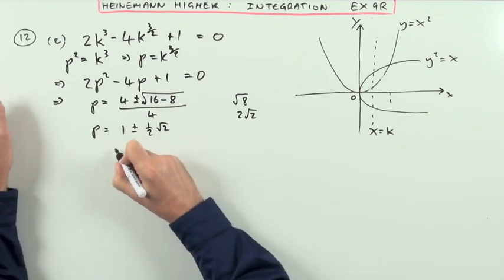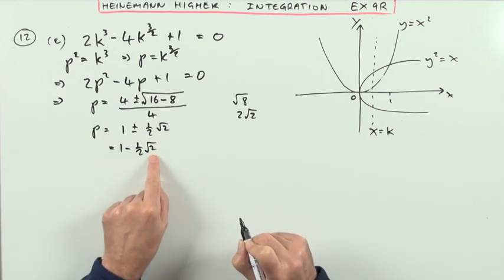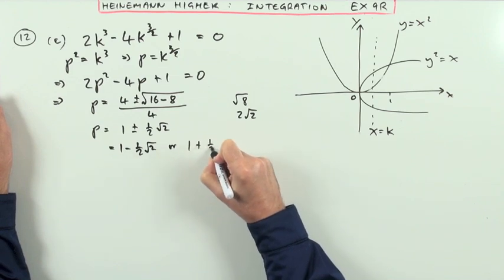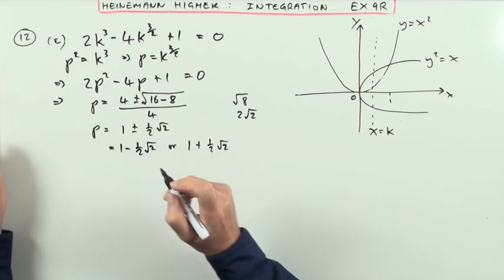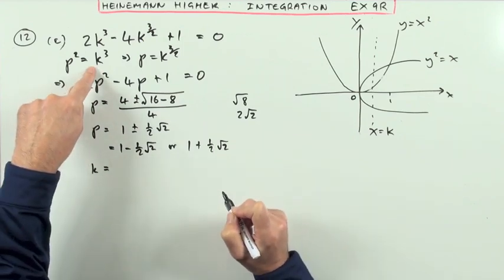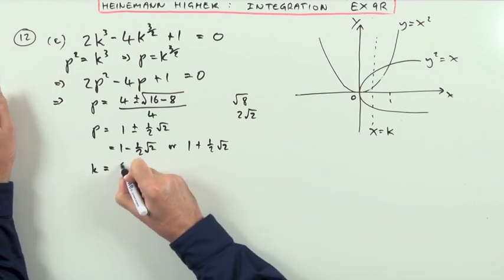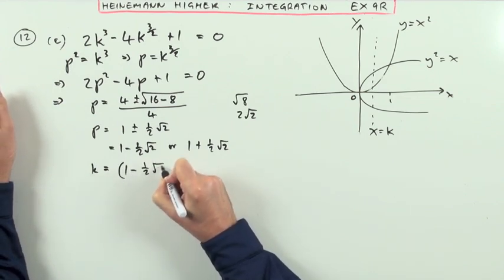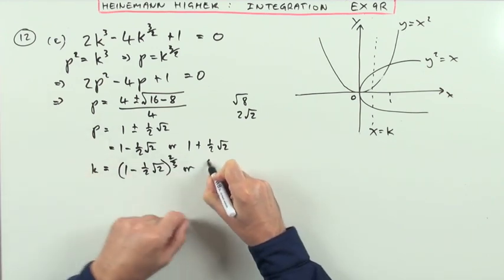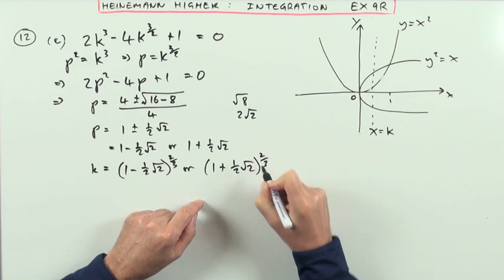So the two values of p are either 1 minus a half root 2, and root 2 is about 1.4, so that is a positive value, or 1 plus a half root 2, which means to get k, unfortunately, I'm going to have to say k is equal to p to the two-thirds. So k is either going to be 1 minus a half root 2 to the power two-thirds, or 1 plus a half root 2 to the power two-thirds.